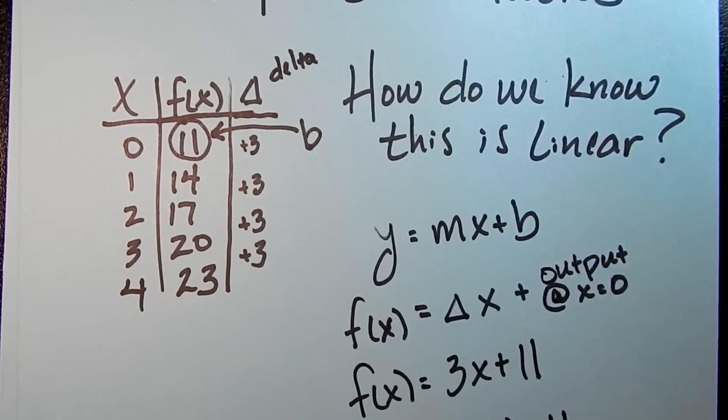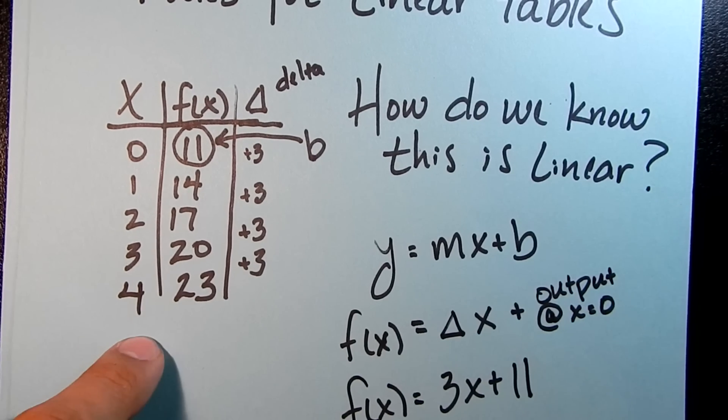So the next thing we're going to talk about is the recursive rule for this table. Now, the recursive rule is a little bit different. So for this particular table, we'll talk about the recursive rule. So what the recursive rule says, we'll talk about the general form first.